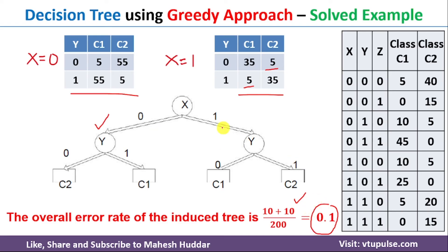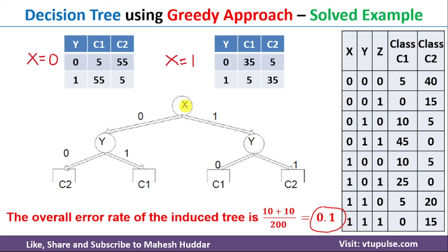The error rate for this particular tree — that is, when X is the root node — is 0.1. In the previous video, we built the decision tree by considering Z as the root node and got an error rate of 0.3. Comparing these two, 0.1 is better than 0.3, meaning that considering X as the root node is the better option compared to Z as the root node. This is how we can build the decision tree for the given data set and calculate the overall error rate.